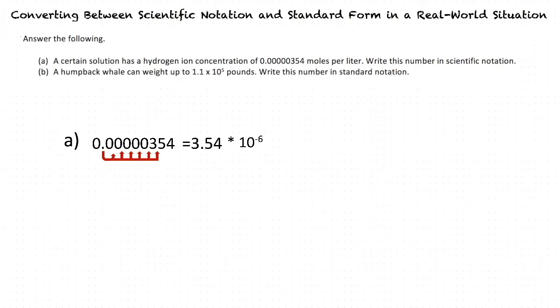To write it in standard notation, we can do multiplication. So 1.1 times 10 to the power of 5 equals 1.1 times 100,000, which equals 110,000 pounds. So the number 110,000 is written in standard notation. And 110,000 pounds is our final answer.